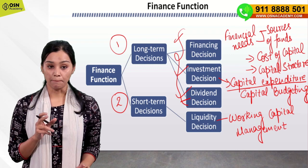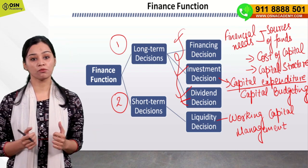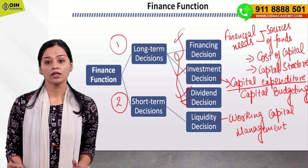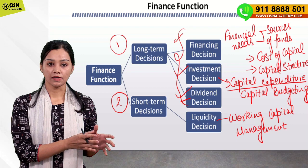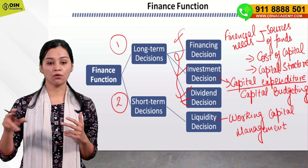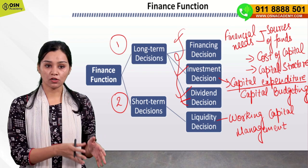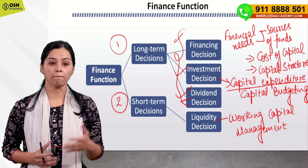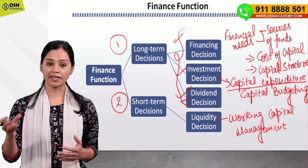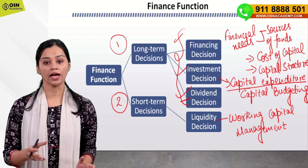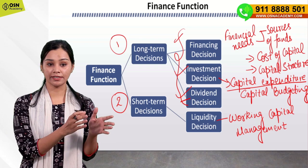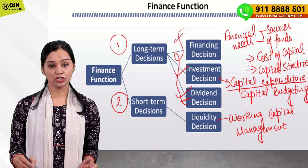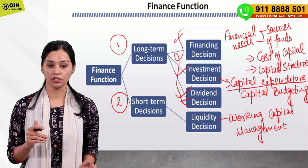Questions from this topic can appear in your exam. Typically a 'match the following' question can come — you may be given cost of capital, capital budgeting, working capital management, and payout ratio in one column, and financing decision, investment decision, dividend decision, and liquidity decision in the other column. You have to match which technique is used in which decision. So remember what activity happens in each decision and which techniques are used to make that decision.